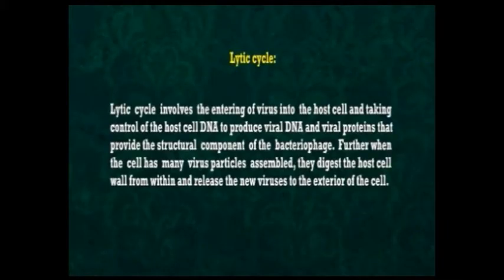The lytic cycle and the lysogenic cycle are the two reproductive processes seen in bacteriophages. When the infection of the cell by bacteriophage results in the production of a new variant, the infection is said to be productive. The lytic cycle involves the virus entering the host cell and taking control of the host cell DNA to produce viral DNA and viral proteins that provide the structural component of the bacteriophage. When the cell has many virus particles assembled, they digest the host cell wall from within and release new viruses to the exterior.